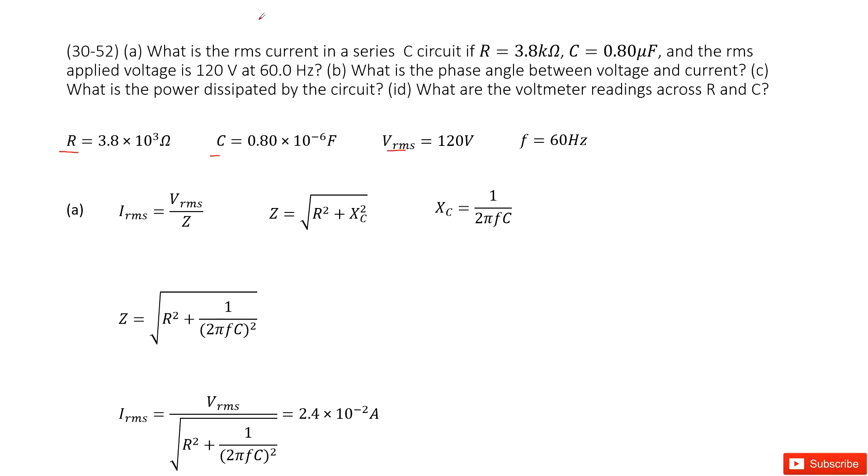First one asks you what is the rms current. So this one is find the current at root mean squared. Very straightforward, we can consider this current Irms equal to Vrms over Z. Z is called impedance for the RC circuits. And for the RC circuits, we can get the Z impedance in this equation.